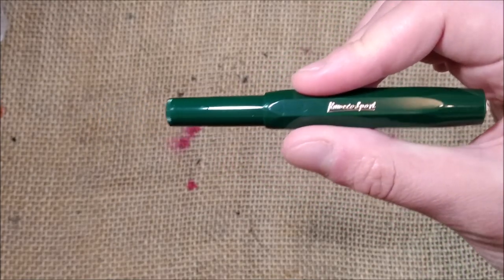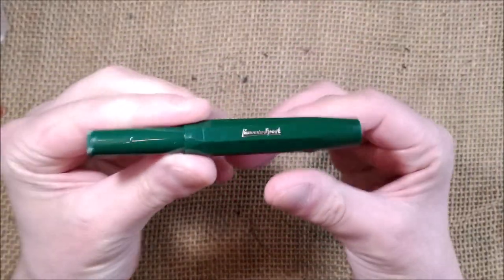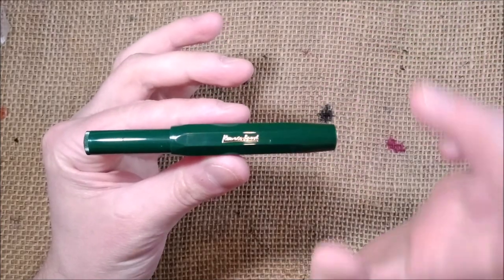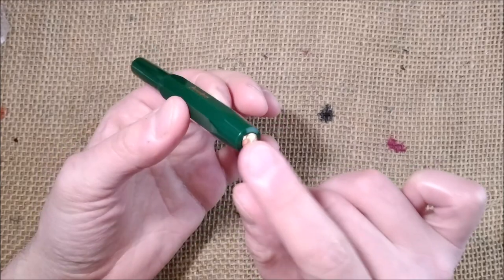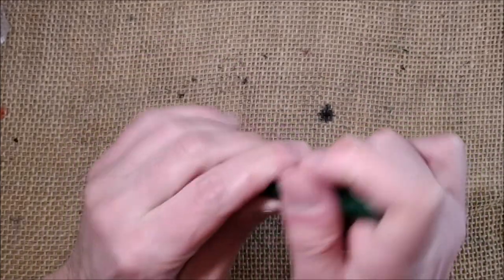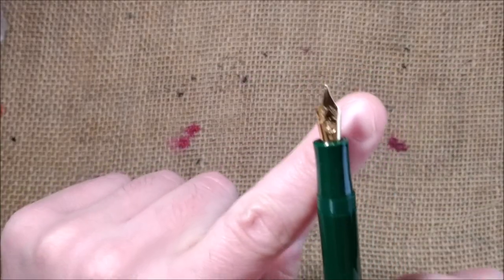This is the Kaweco Classic Sport green. Let me move the light closer, put it a little stronger now. So this is the regular Kaweco Classic Sport green. Classic Sport means it has gold trim, gold medallion on top of the cap, gold engraving on the cap, and also gold plated nib.